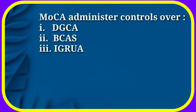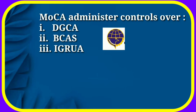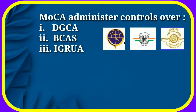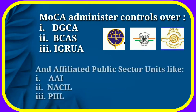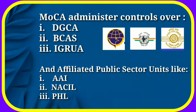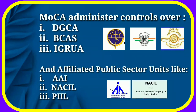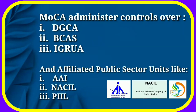The Ministry of Civil Aviation also administers controls over different organizations like DGCA, Bureau of Civil Aviation Security, Indira Gandhi Rashtriya Uran Academy, and affiliated public sector units like Airports Authority of India, National Aviation Company of India Ltd, and Pawan Hans Ltd.